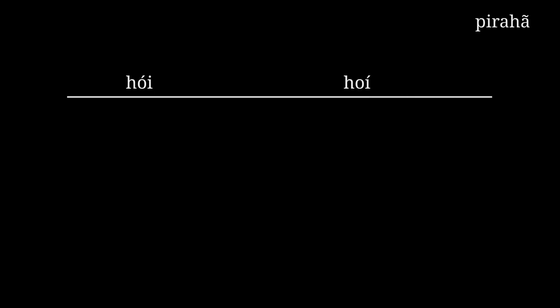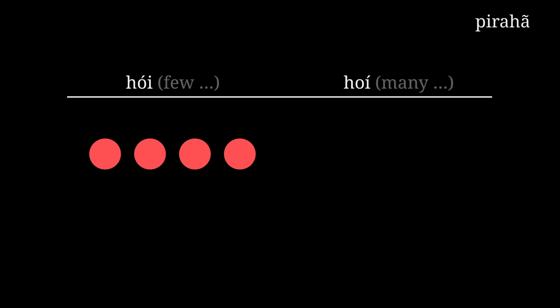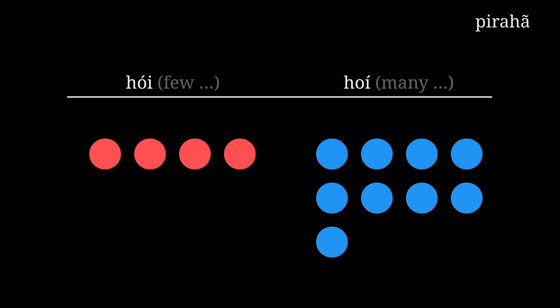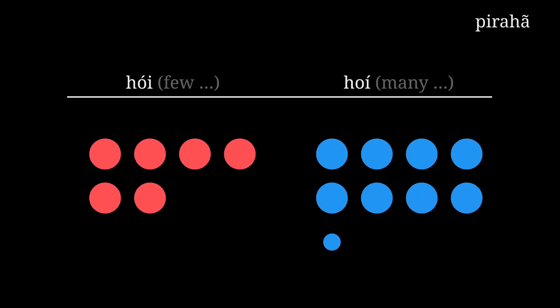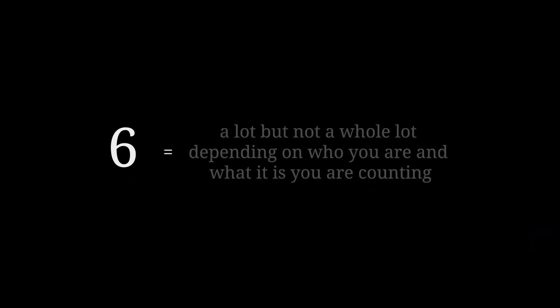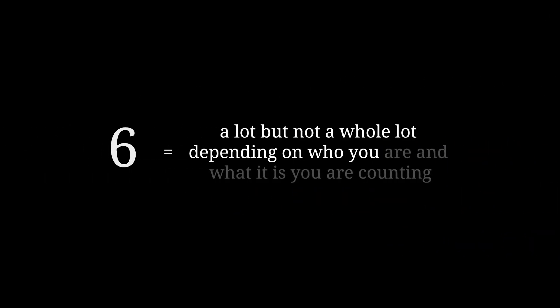And then there's Piraha. This Brazilian language has only two numbers, which don't express definite values but rather relative quantities like few, fewer, many, more — that kind of thing. So one Piraha speaker might consider 1, 2, 3, and 4 of a thing as 'hoi,' but 5 and more as 'hoi.' And equally and without contradiction, their buddy might consider up to 6 of a thing as 'hoi' and 7 or more as 'hoi.' What these numbers mean can change person to person and situation to situation — it'd be like the number 6 meaning 'a lot but not a whole lot' depending on who you are and what you're counting. Counting in Piraha is strange.